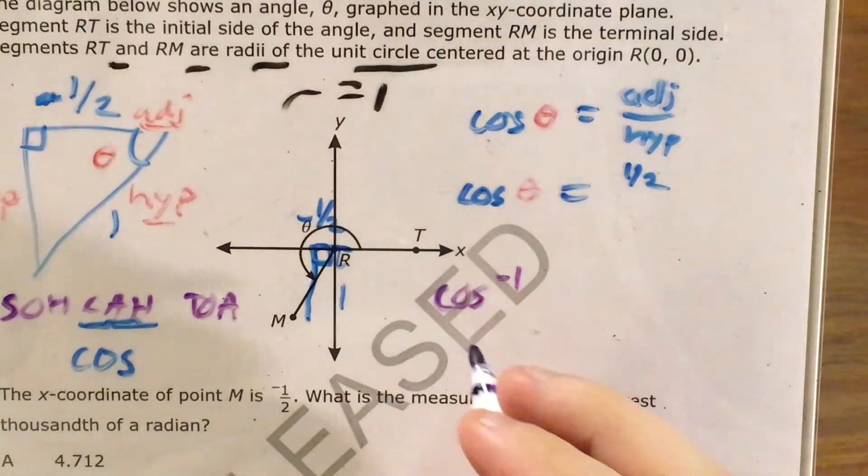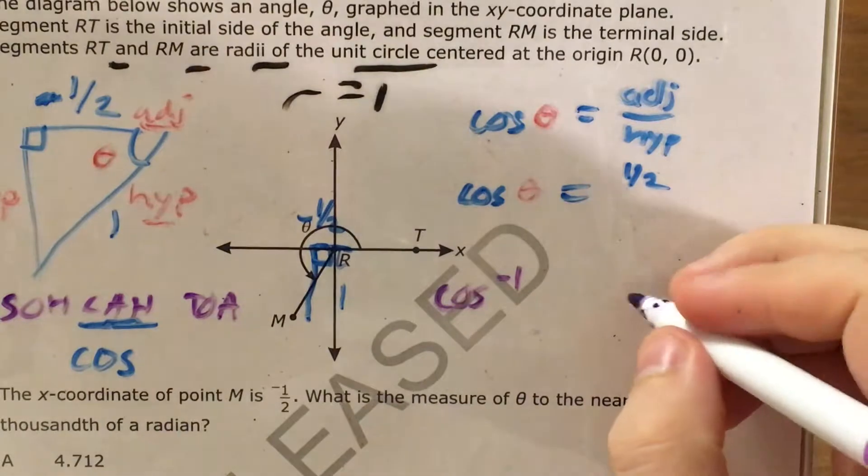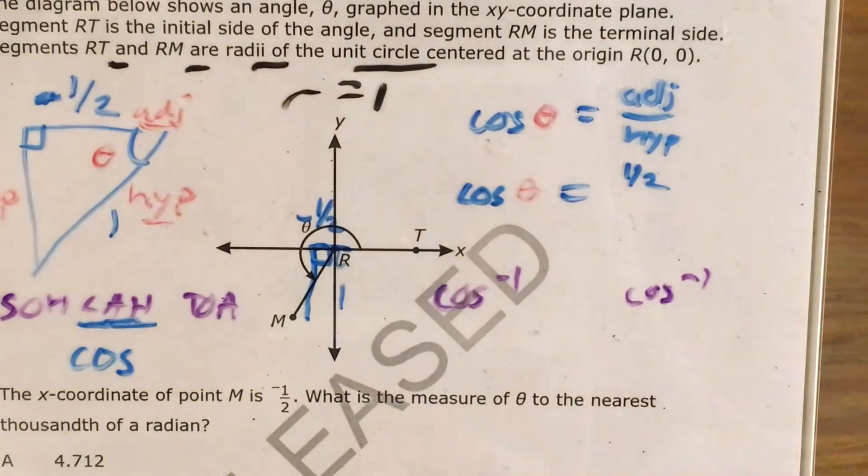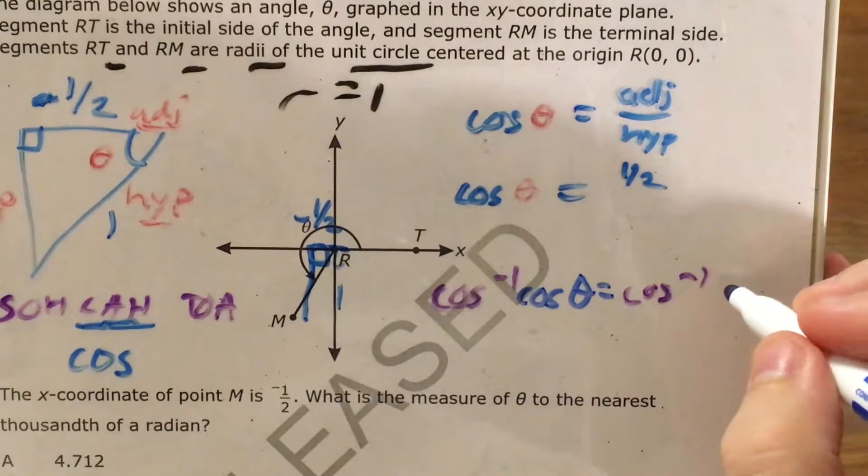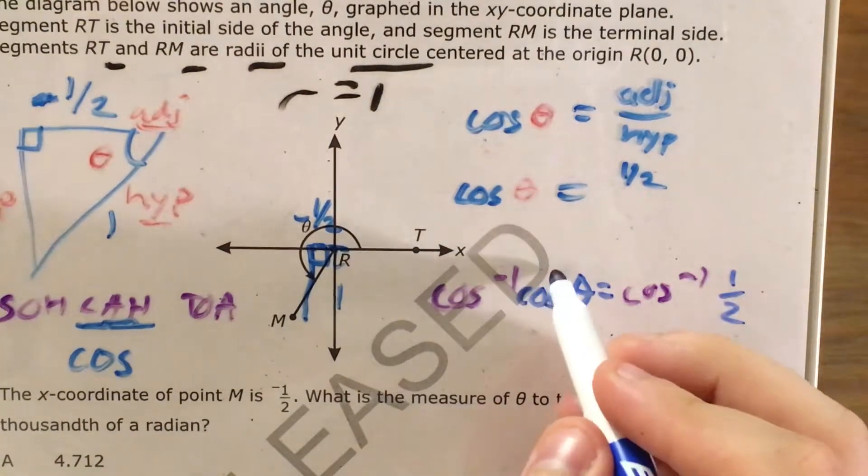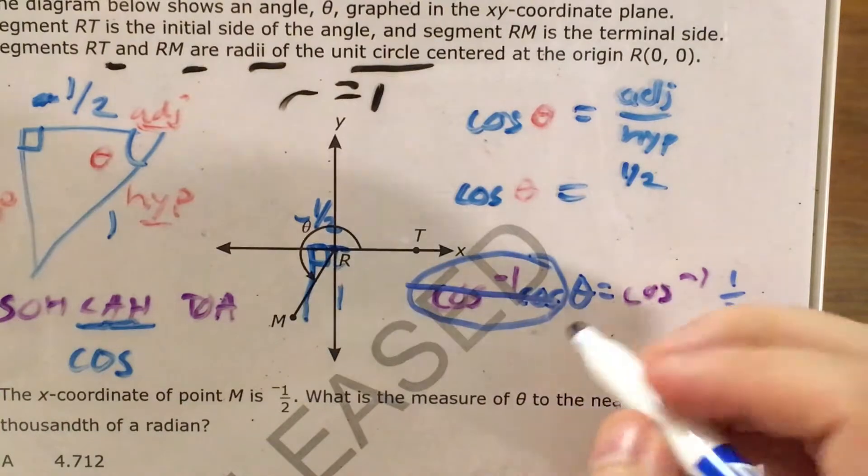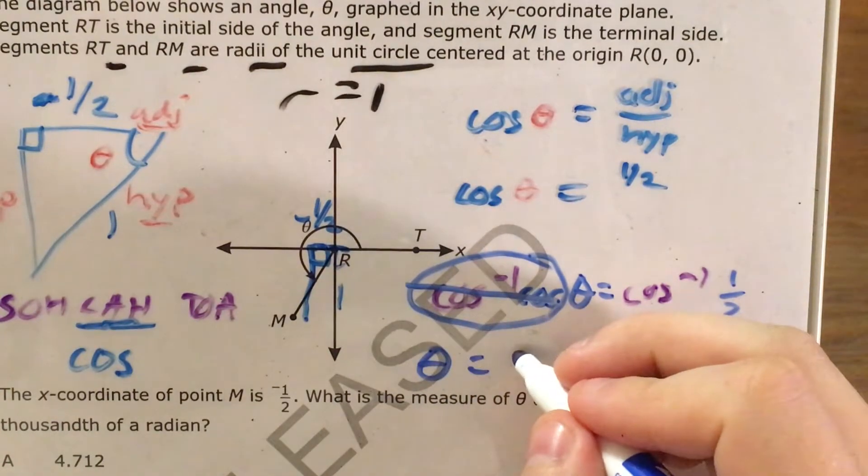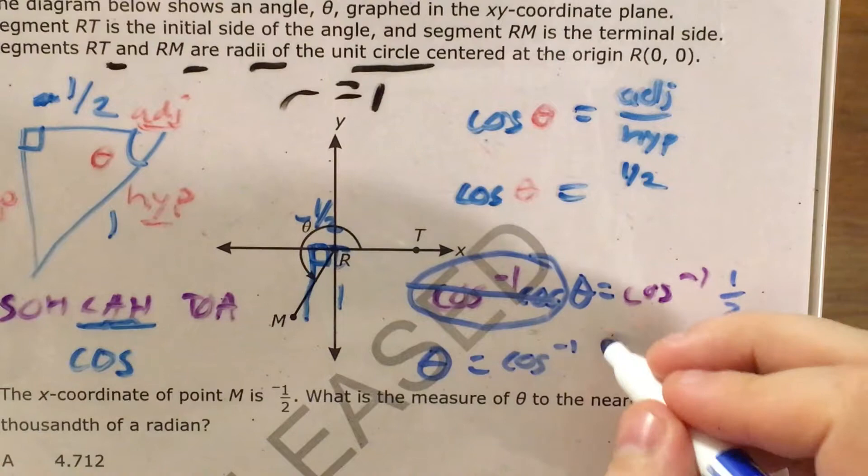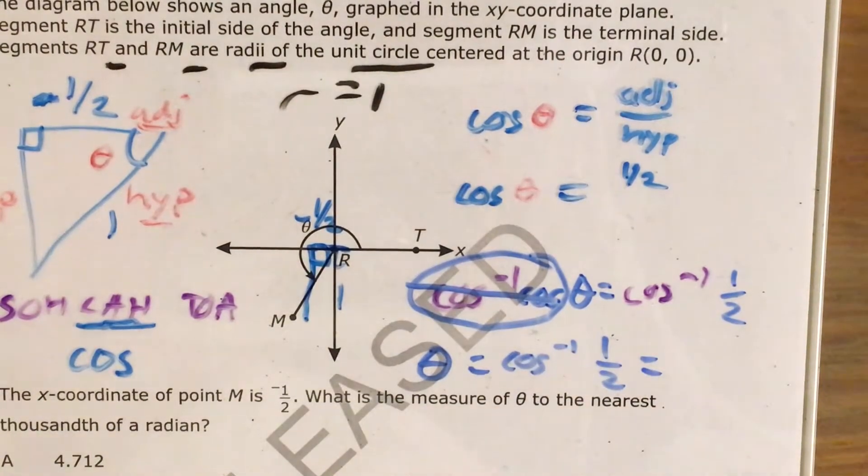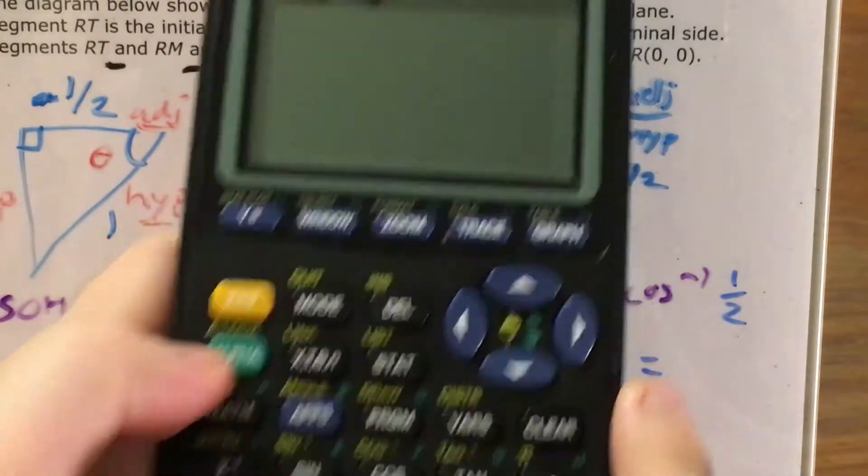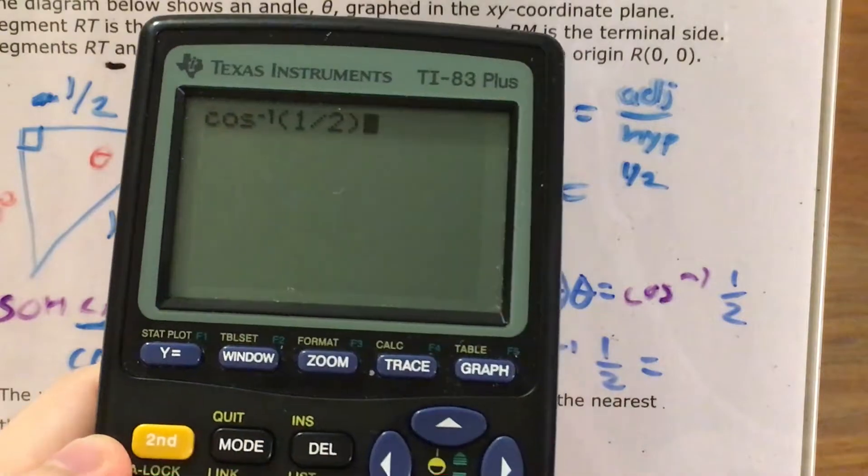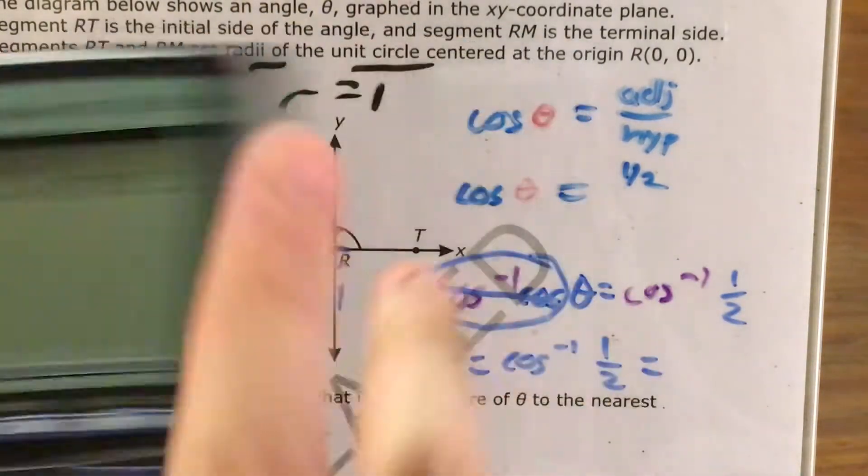So essentially, I'm going to rewrite this, but I'm going to have to use this cosine inverse thing. So this is the cosine inverse of cosine of theta equals the inverse cosine of 1 half. And now cosine inverse and regular cosine are going to cancel, which leaves me with theta equals the inverse cosine of 1 half. And so for cosine inverse, I press 2nd, and then cosine inverse of 1 half. And since I'm in radians, it gives me 1.047.